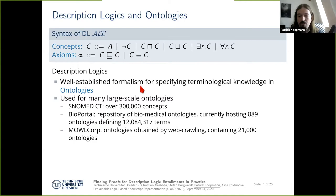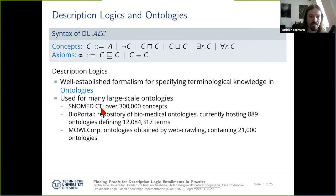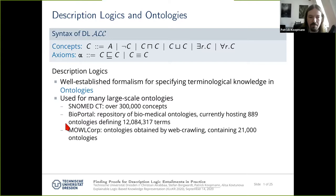This is a well-established formalism for specifying terminological knowledge. There is also a standard called OWL used to define these ontologies, and it is now used for many large-scale ontologies. One example is SNOMED CT, a medical ontology used in many health sectors today. Last time I checked it defined over 300,000 concepts — and I wouldn't be surprised if the number is now close to a million, with many recent additions relating to COVID.